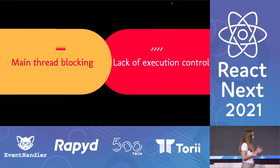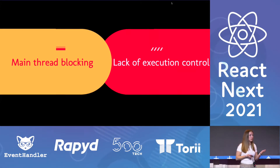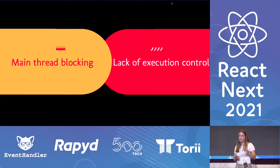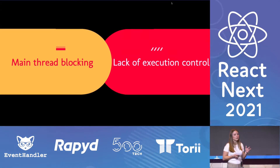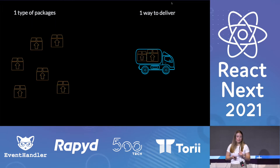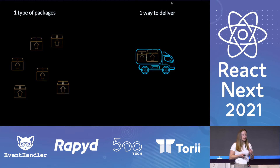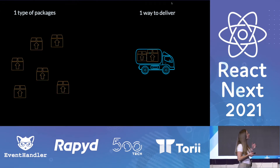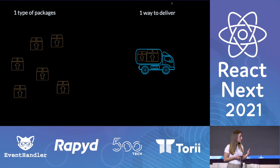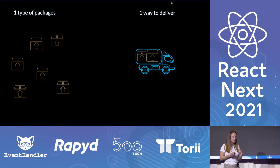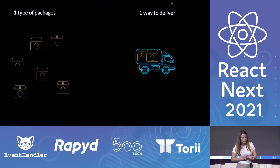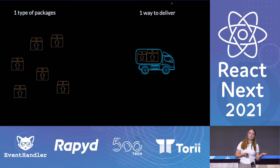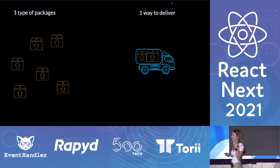The main issues were main thread blocking and lack of execution control — we had no idea which tasks were important or low priority versus high priority. They had an idea of separating tasks into different chunks. I like to think about this in terms of a delivery system, like FedEx. We have different-sized packages but only one way to get them to the customers. The stack reconciler gave every task the same priority, executing them one after another.